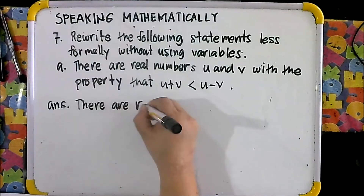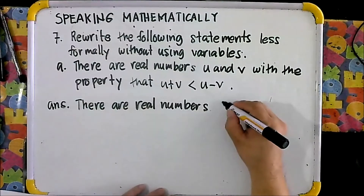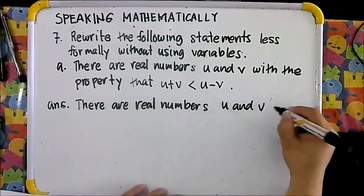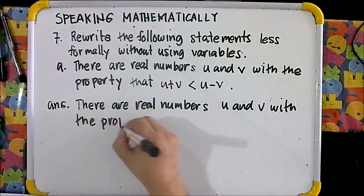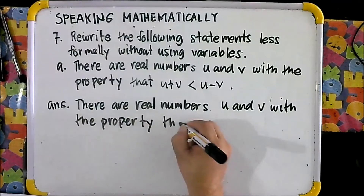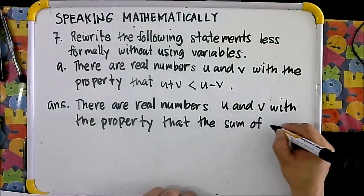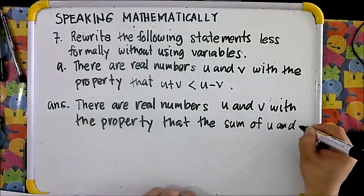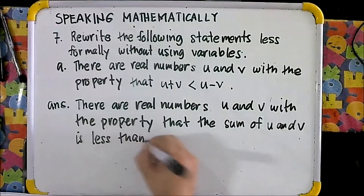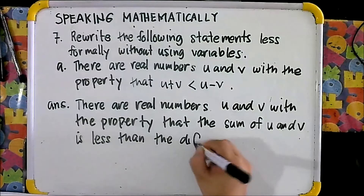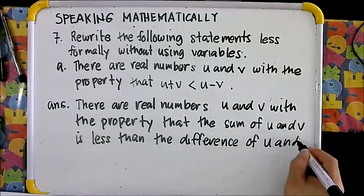So your answer is: there are real numbers U and B with the property that the sum of U and B is less than the difference of U and B.